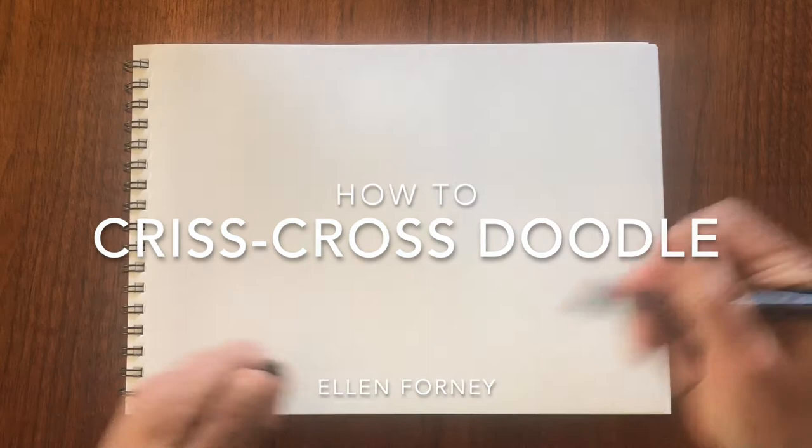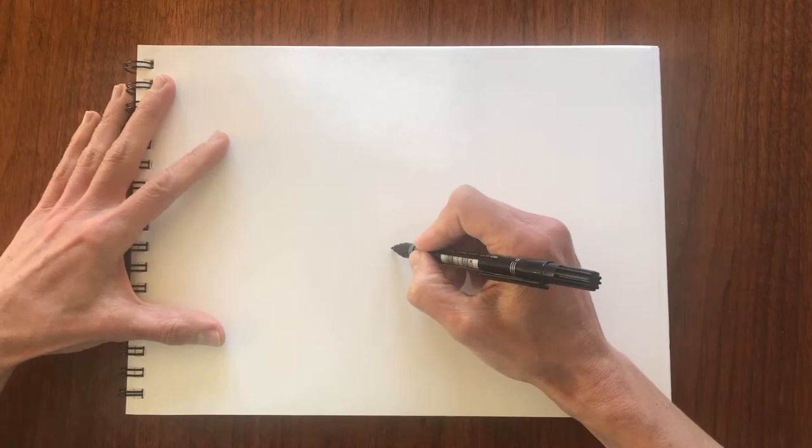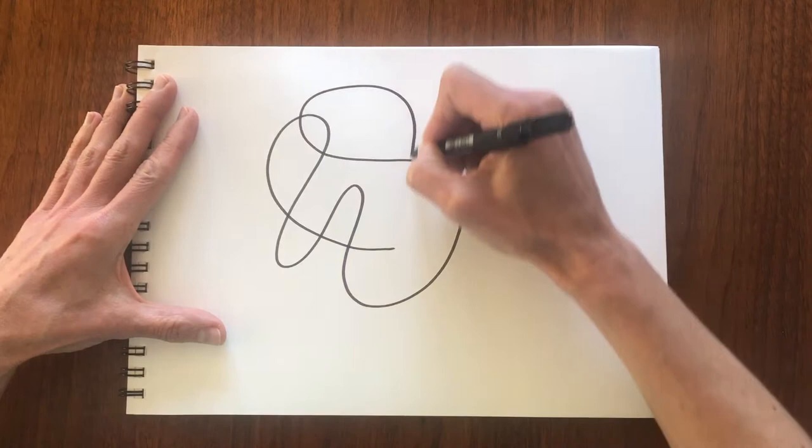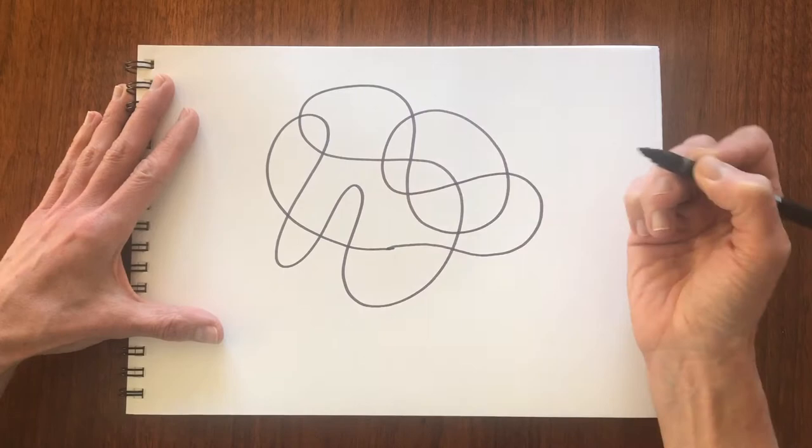The basic idea of crisscross doodle is to draw a shape without lifting your pen from the paper, where the places that the lines touch cross at a distinct angle, and then at the end the ends of the lines meet.